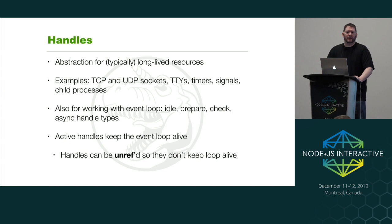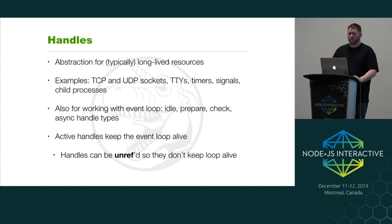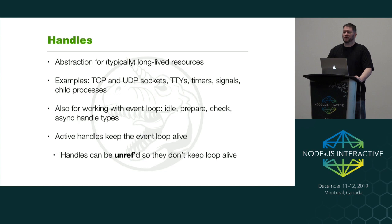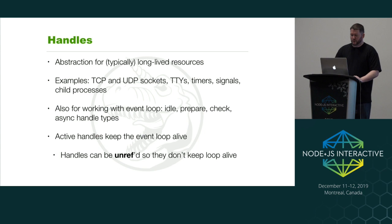To really use LibUV effectively, there are a few concepts you need to understand. The first is handles — an abstraction for typically long-lived resources such as sockets, child processes, TTYs, and timers. We also have a couple of handle types for interacting with the event loop: an idle handle, which is poorly named because it actually runs on every iteration of the event loop; prepare and check handles, which run before and after IO polling; and async handles, which can be used to wake up the event loop if it's sleeping.